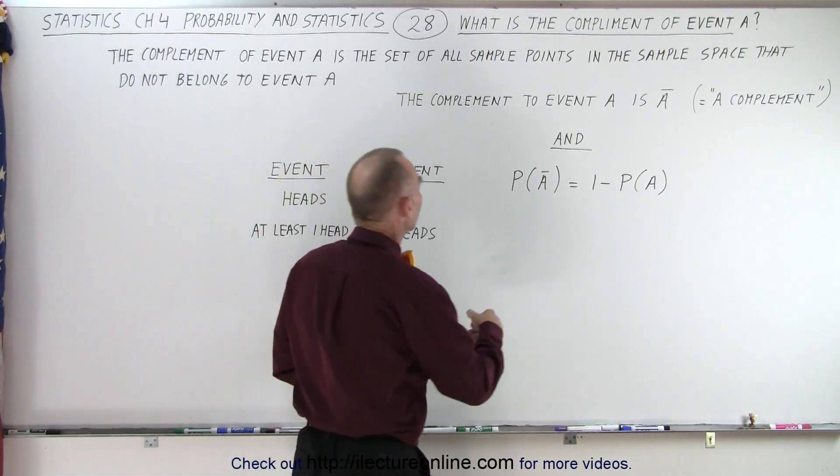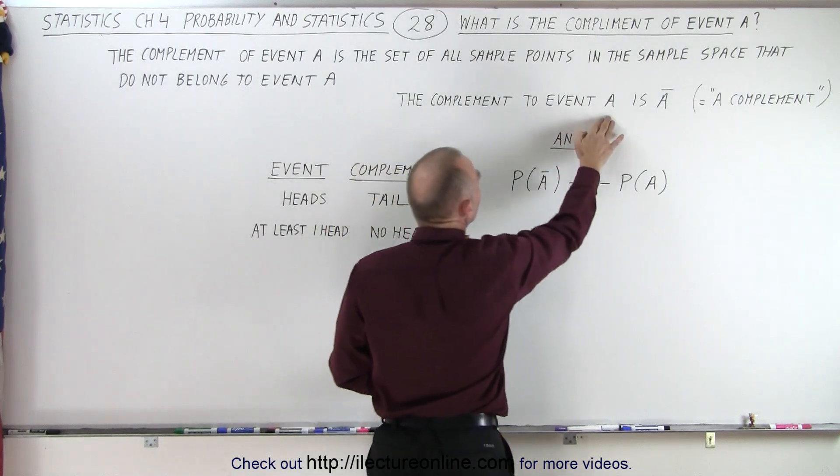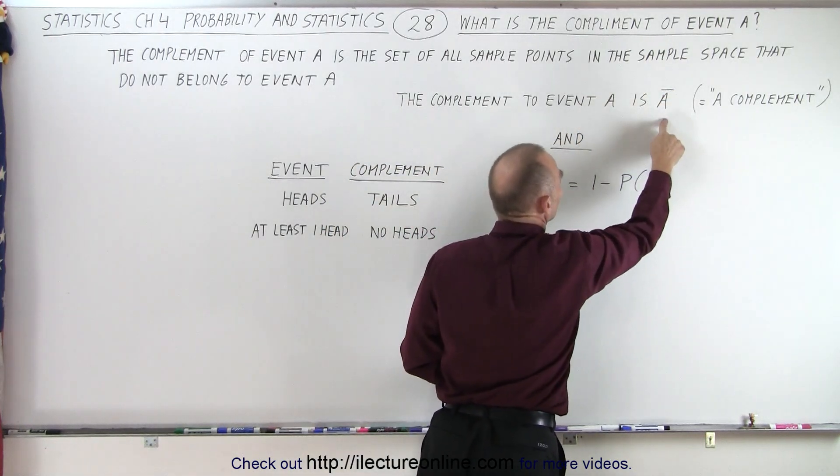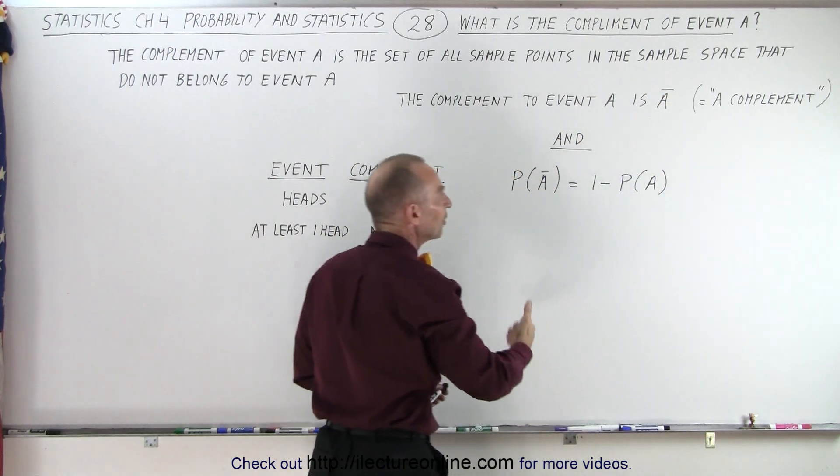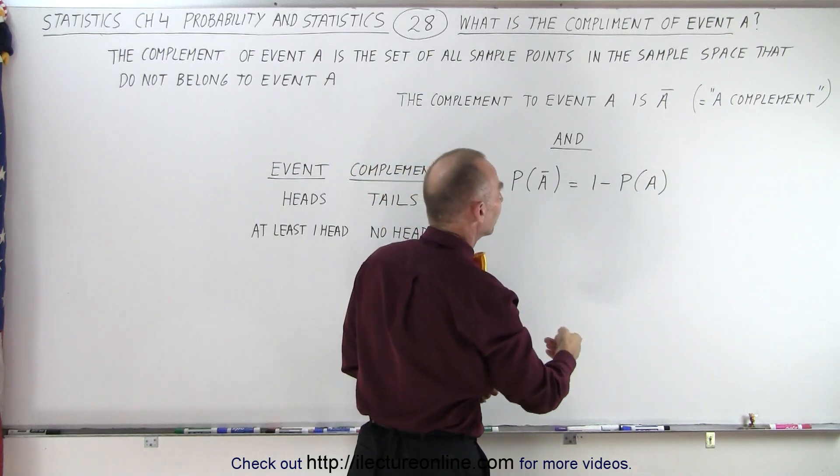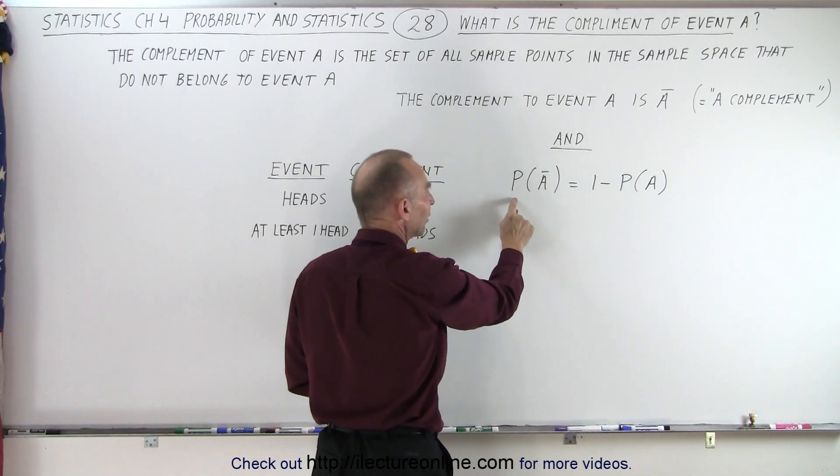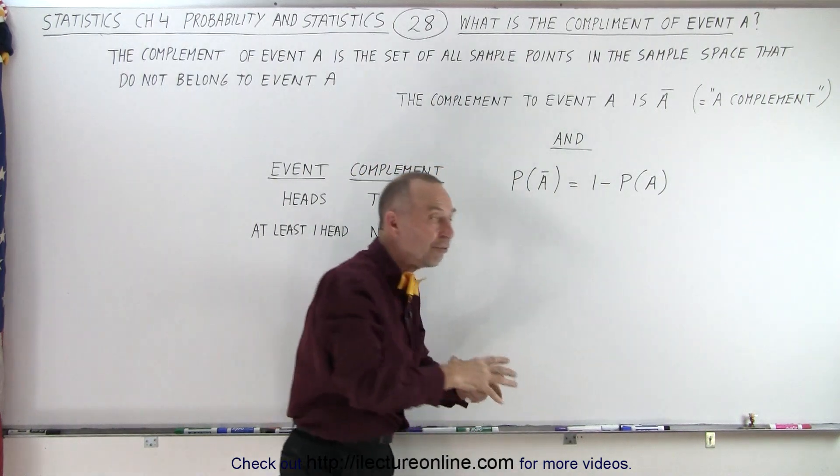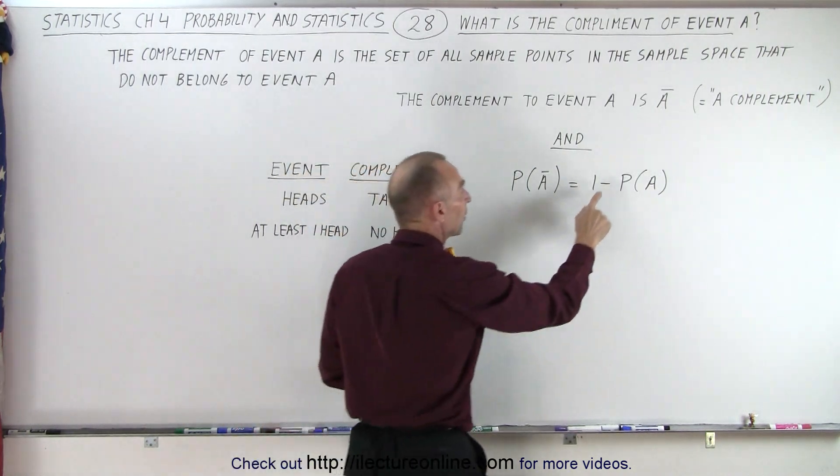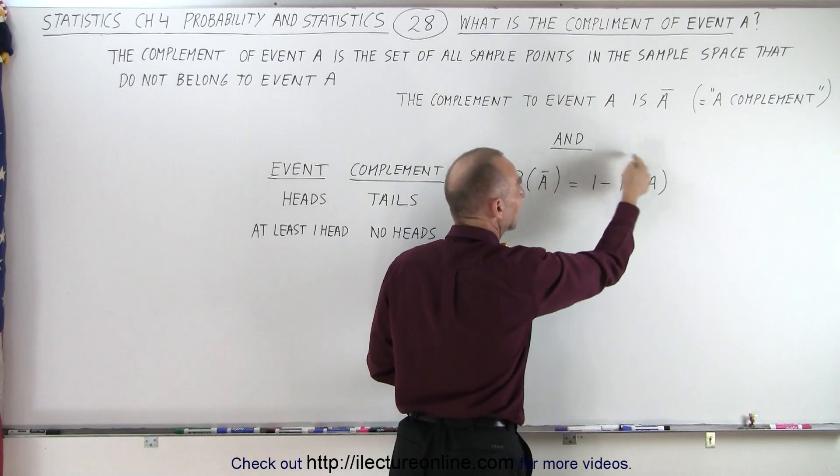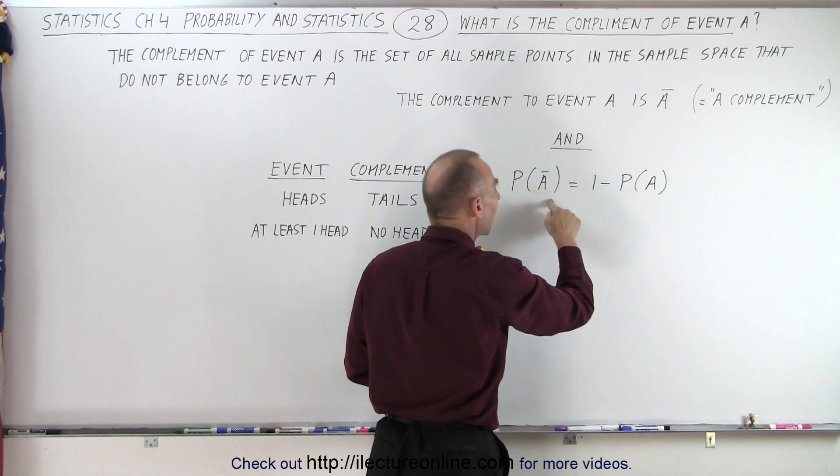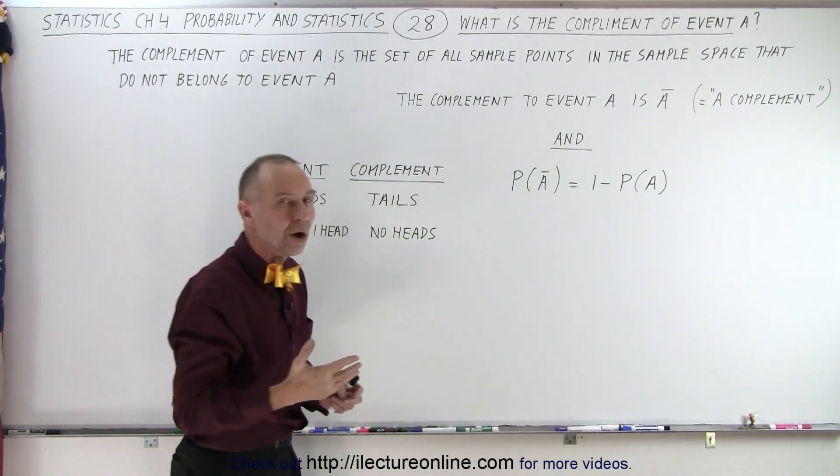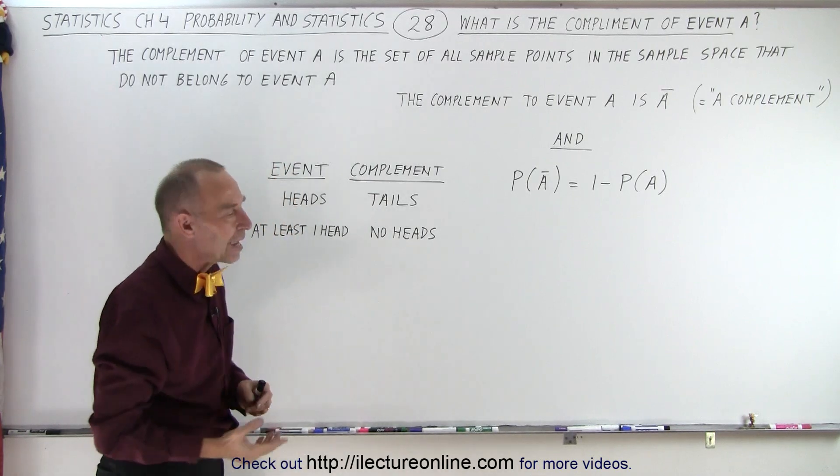The way we write that is as follows. The complement to event A is written as A with a line over it, and we pronounce it as A complement. And the equation to find the probability of A complement, we simply take the probability of all events minus the probability of event A. And that then is defined as A complement, the probability of getting everything but A.